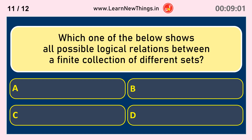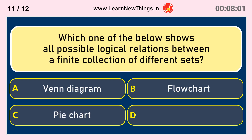Which one of the below shows all possible logical relations between a finite collection of different sets? Venn Diagram.